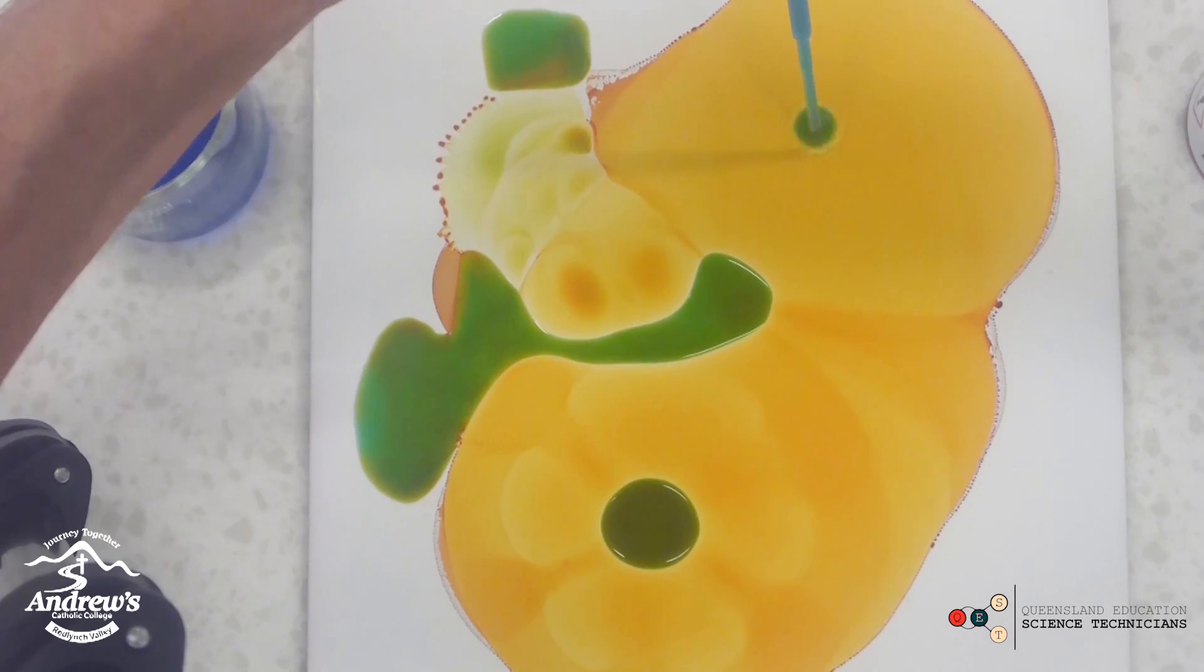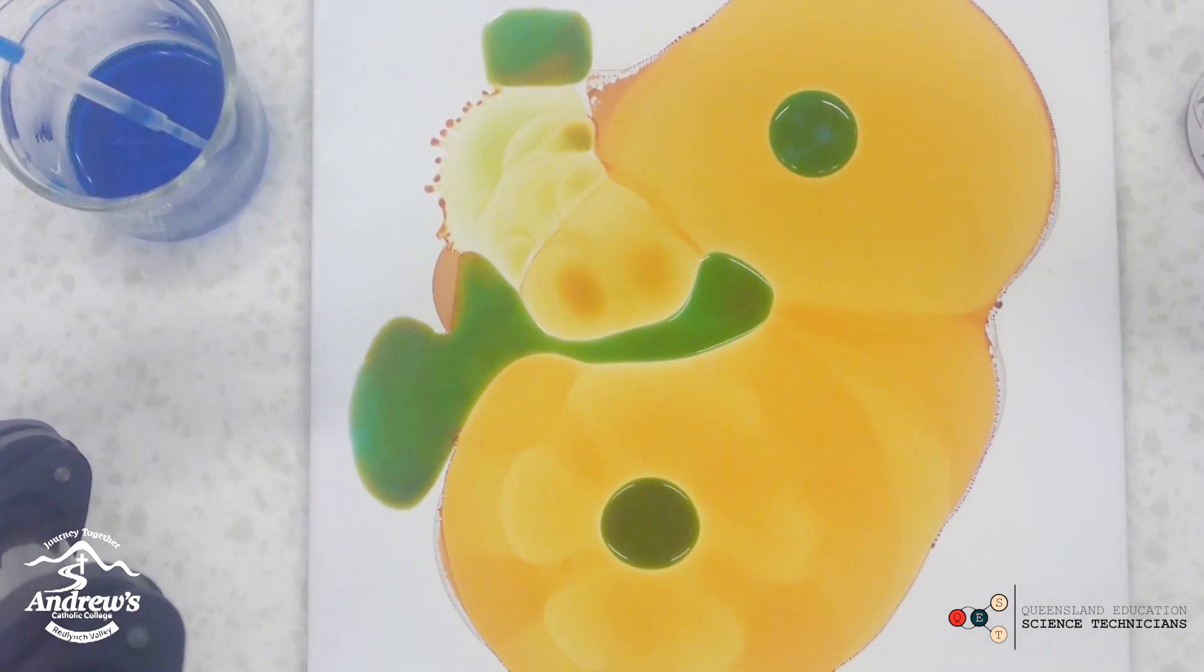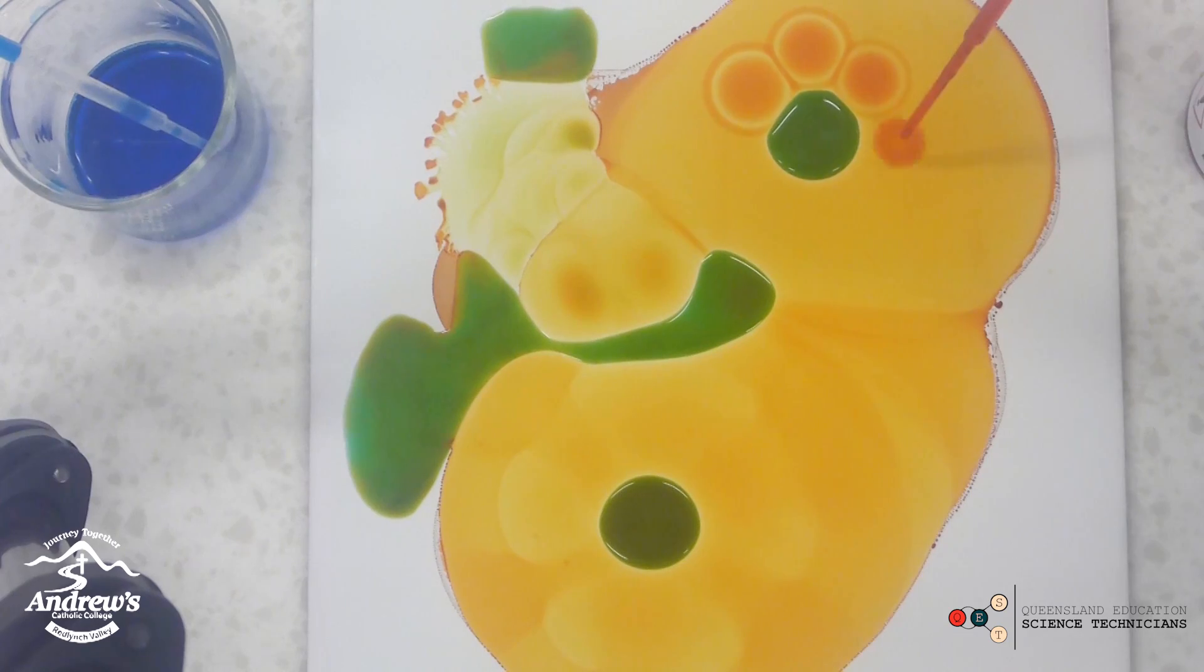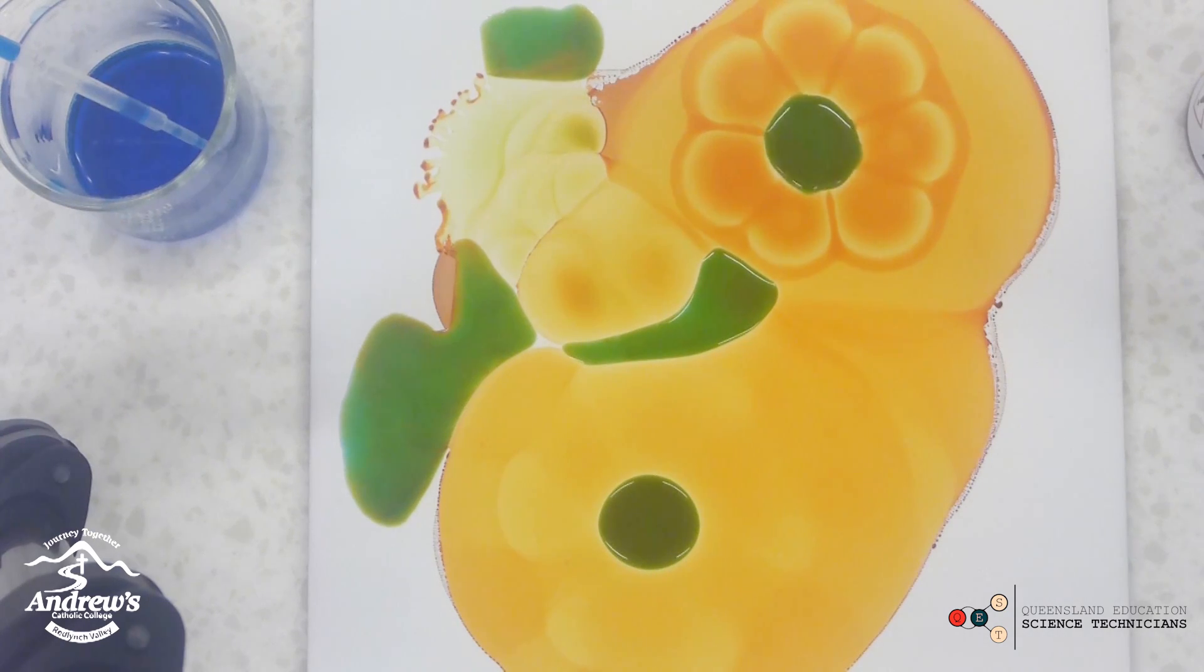Put one there. Try and surround this one too. Turn it into a nice flower shape. Force it to mix.